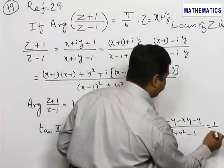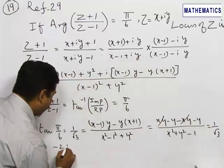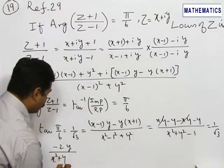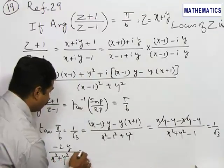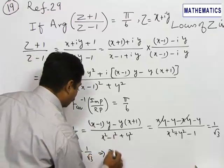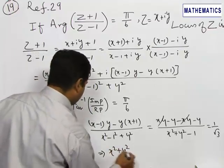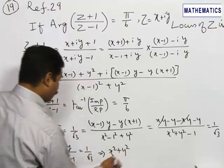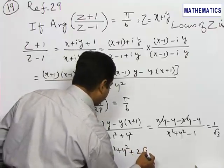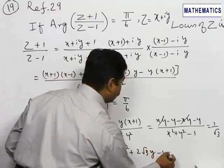This reduces to -2y / (x² + y² - 1) = 1/√3. Cross-multiplying gives x² + y² times 1/√3 = -2y. Bringing -2√3y to the other side gives +2√3y, with -1 remaining. The final expression is x² + y² + 2√3y - 1 = 0.